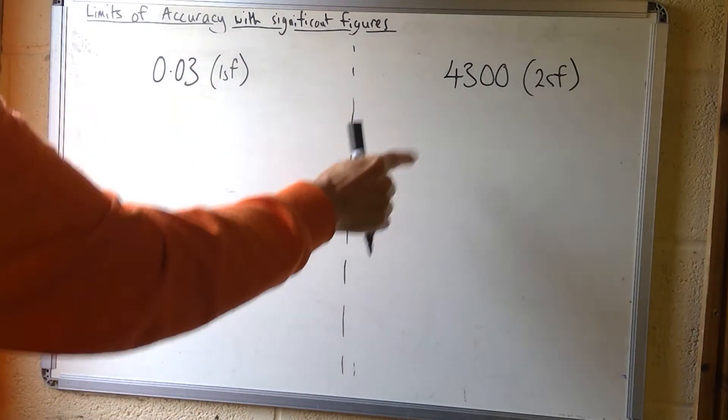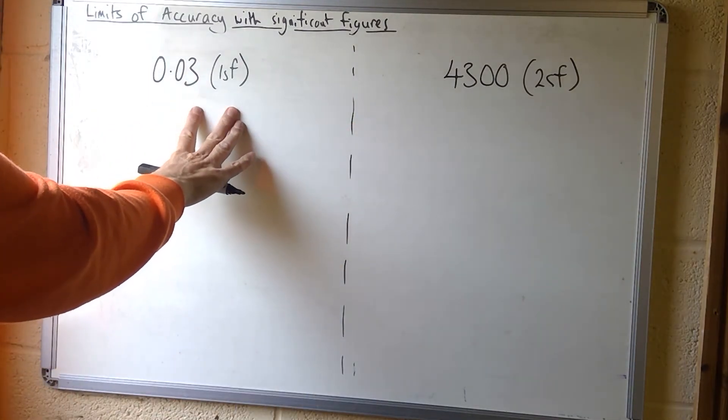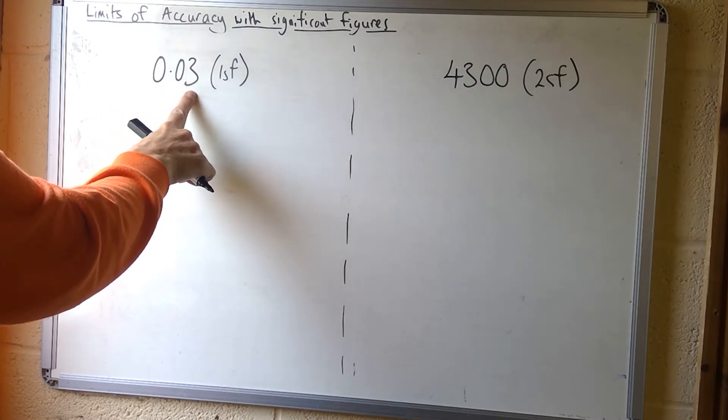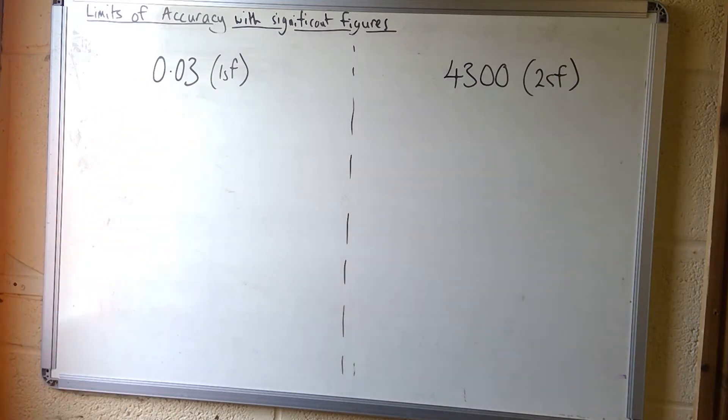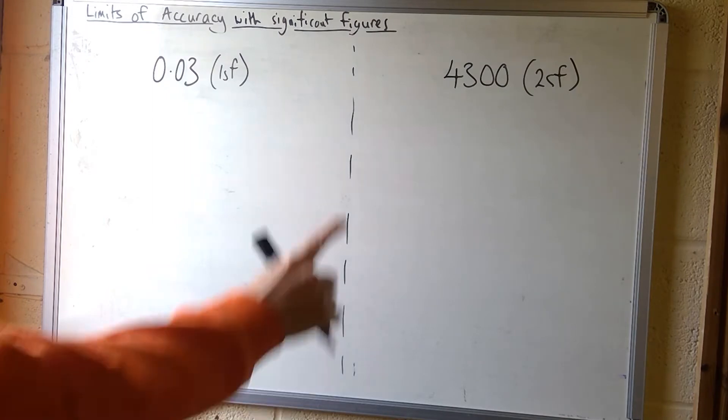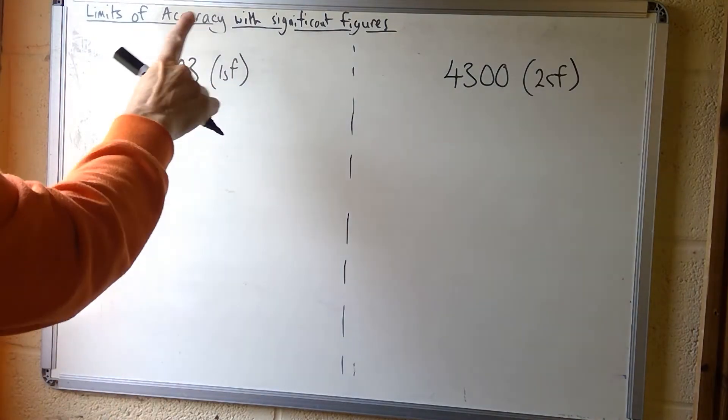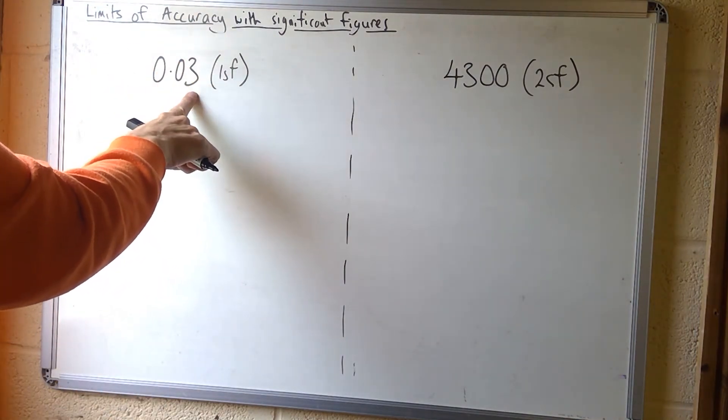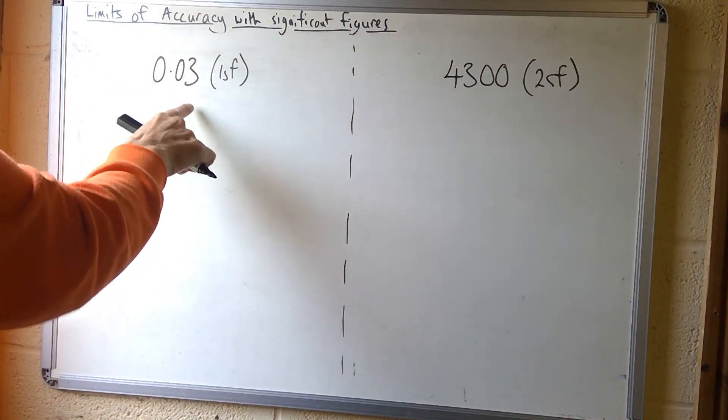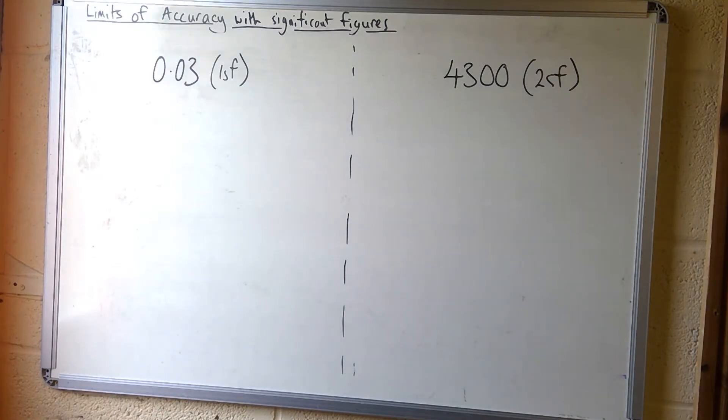I've got two examples. We're going to start with this one: 0.03 rounded to one significant figure. The idea of significant figures is you can round large or small numbers. This one's first significant figure was in the hundredths column, so in effect it's been rounded to the nearest hundredth.